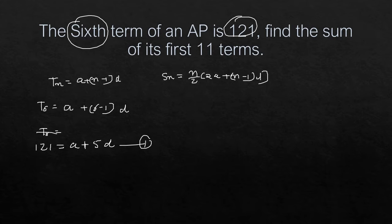So T_6 = 121, which means a + (6−1)d = a + 5d = 121. This is equation number one. Now we can find the sum of the first 11 terms.